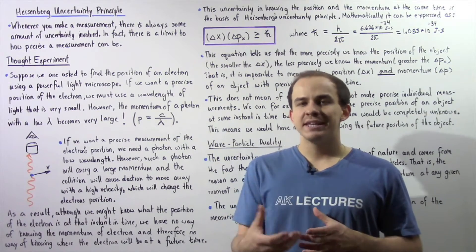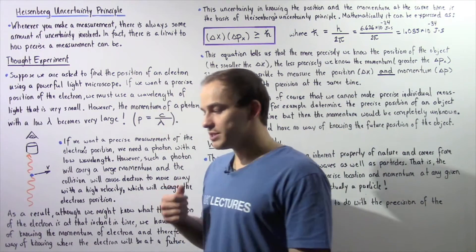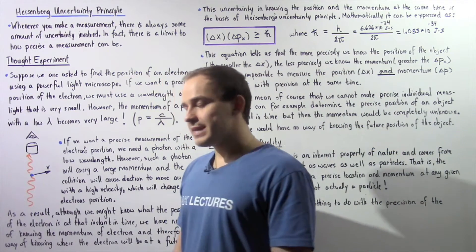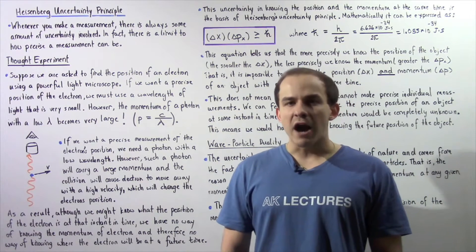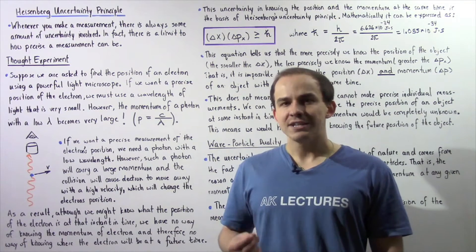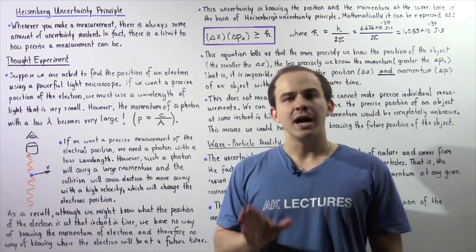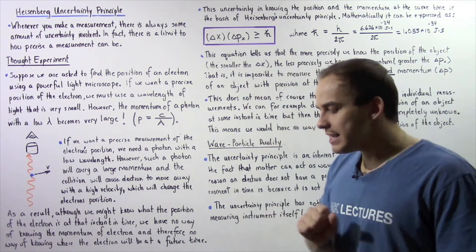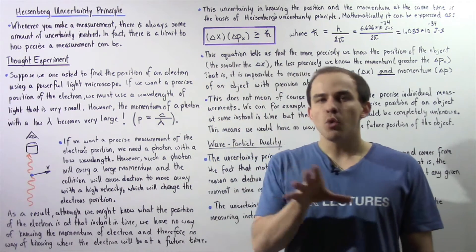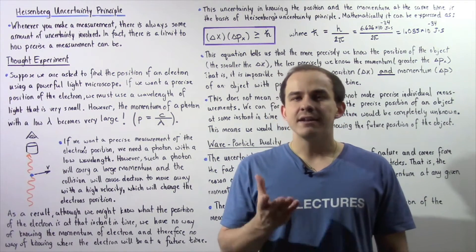As we might already know, quantum mechanics deals with the atomic and subatomic worlds. When we make measurements of objects found on the atomic and subatomic level, there always exists an amount of uncertainty that involves those particular measurements. In fact, there is a limit to how precise those measurements can be made, and this is known as the Heisenberg Uncertainty Principle. As we'll see towards the end of this lecture, the Heisenberg Uncertainty Principle is a result of the wave-particle duality of matter that exists on the subatomic and atomic level.